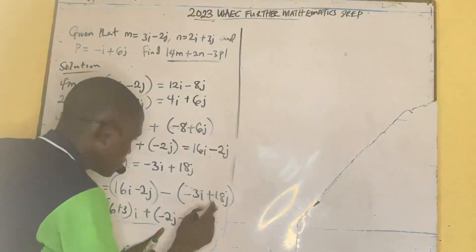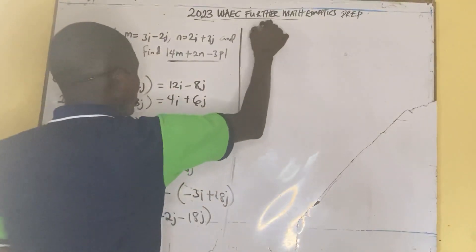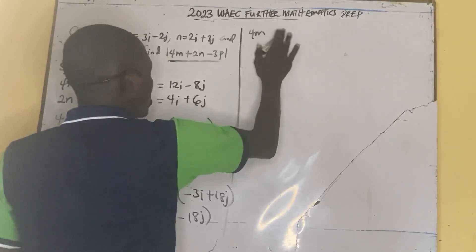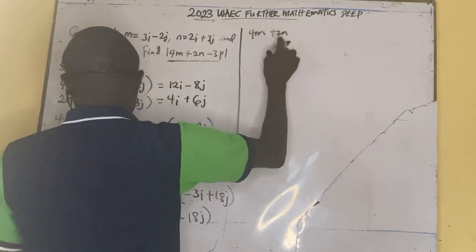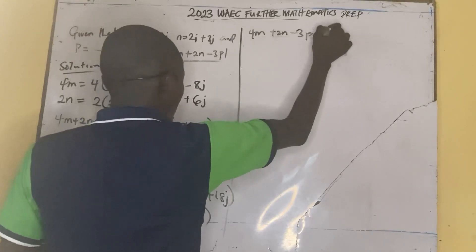Why? Because minus then it's supposed to be minus. So we now have 4m plus 2n minus 3p. It will be what?